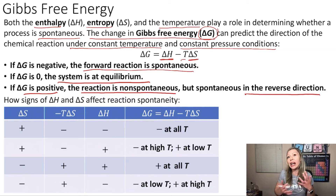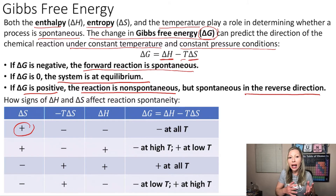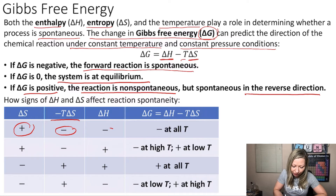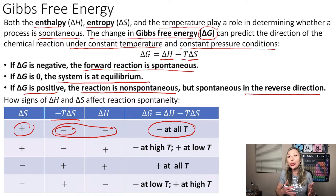The sign of ΔH and ΔS actually affects the reaction spontaneity. If we have a ΔS that is positive, when we multiply it by minus T, we are going to get a negative value. If ΔH is also negative, the two together are going to give us a negative ΔG at all temperatures, meaning that the process is going to be spontaneous in the forward direction.